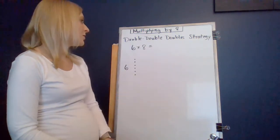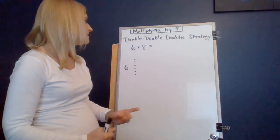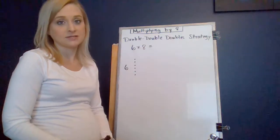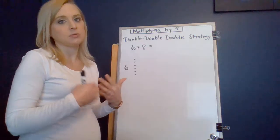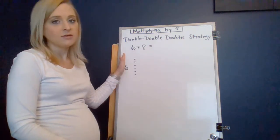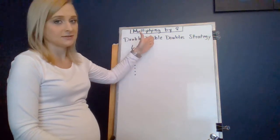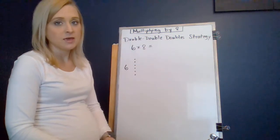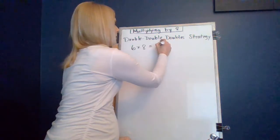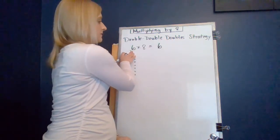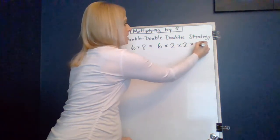So let's jump in and talk about multiplying six times eight, usually a very difficult fact for kids to memorize. When we use the double-double-double strategy, we are actually thinking about the eight as being the double-double-double. So we're going to take the other factor and we're actually going to double that factor, then double that, then double that one more time. When we write doubling out, we're going to start with this factor of six and double it, then double it again, and then double it again.